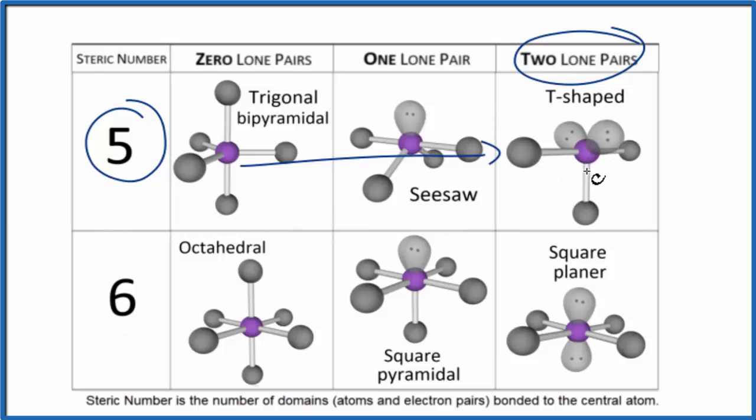If we wanted to know the electron geometry, we'd have to look at the atoms and the lone pairs. That would give us a trigonal bipyramidal molecular geometry.